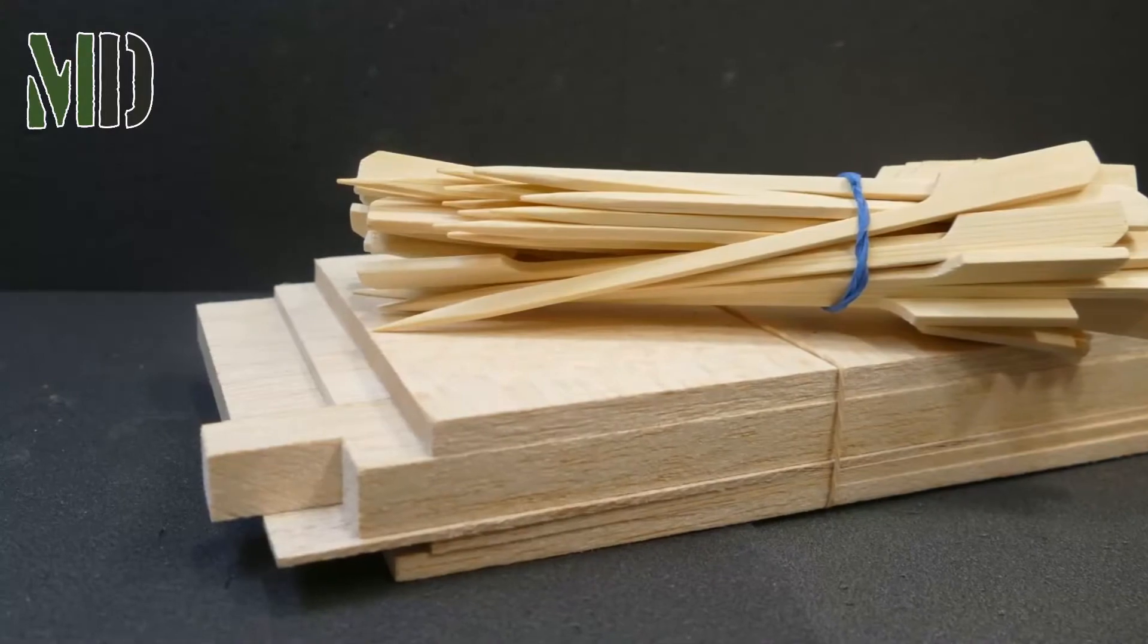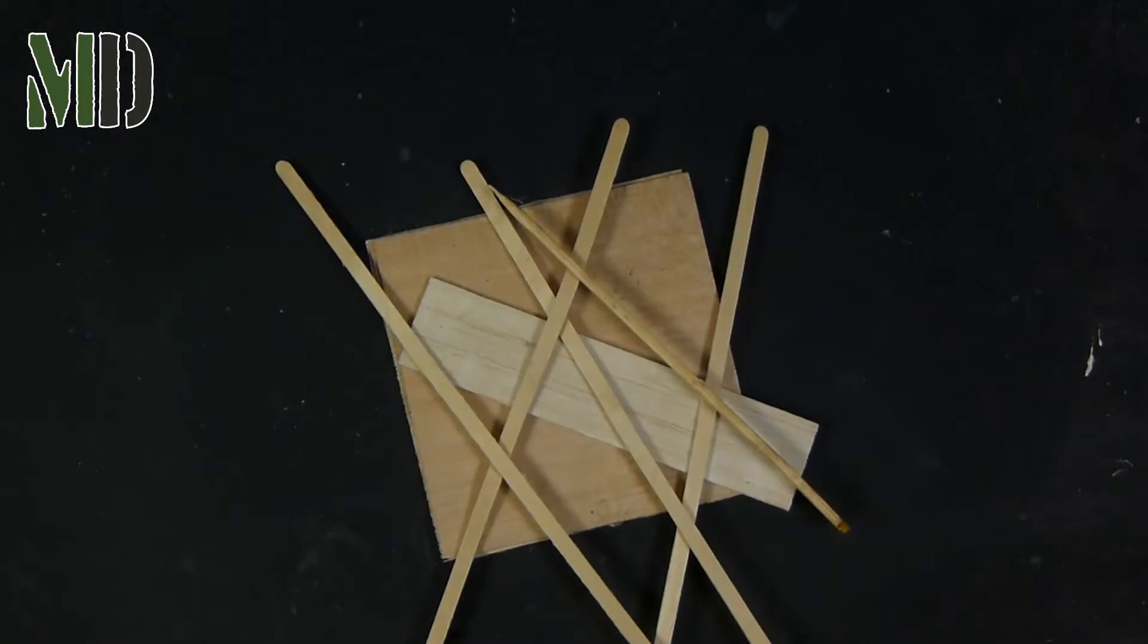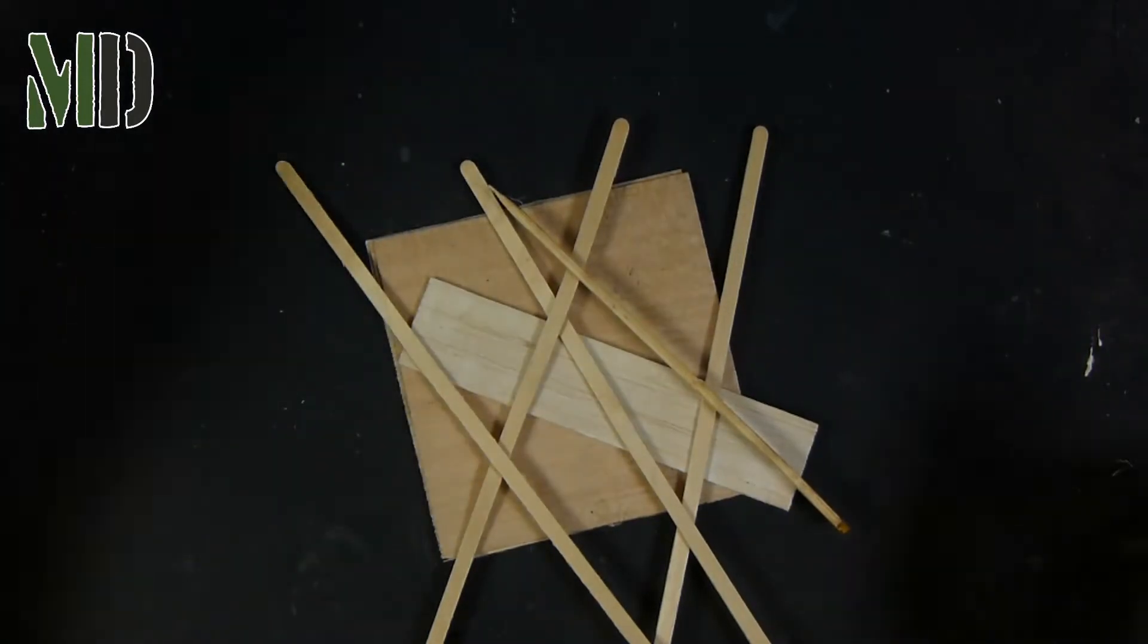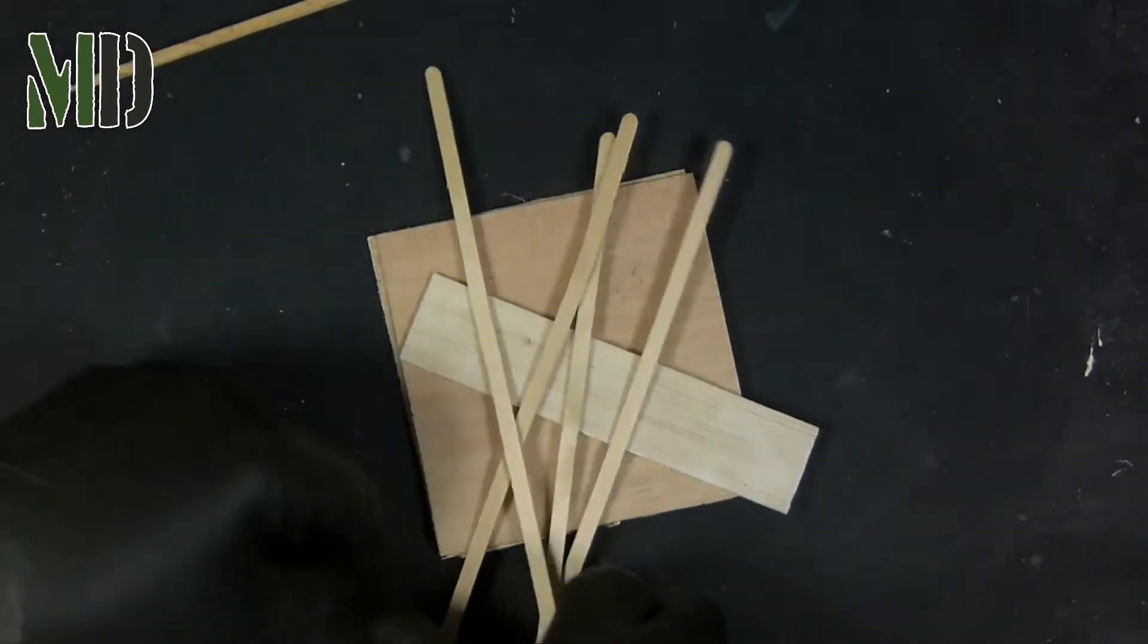The main product for the build will be balsa wood, but I'll also be using some burger skewers for the fence posts, though you can cut these out of balsa wood. And also I'll be using a takeaway foil container for the corrugated steel.